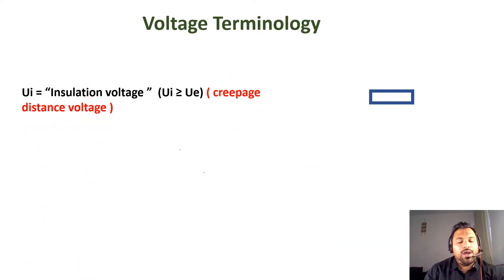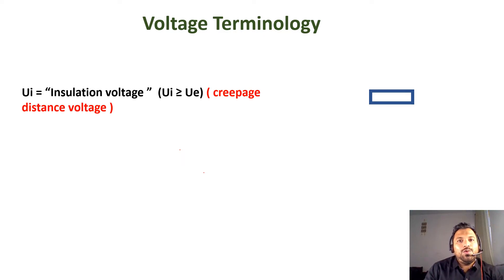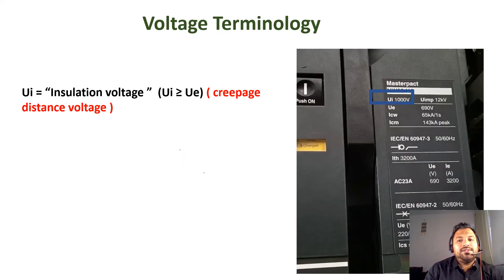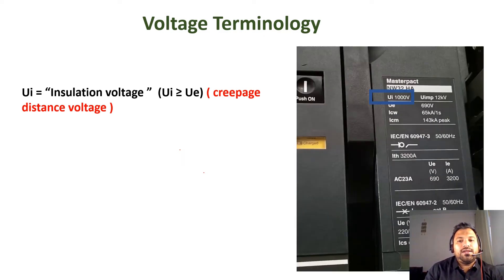The next terminology is Ui — the insulation voltage, also called creepage distance voltage. Basically, the Ui value is always greater than the operational voltage. On this circuit breaker, Ui is indicated as 1000 volts, while the operational voltage Ue is 690 volts. So Ui must always be greater than the operational voltage.